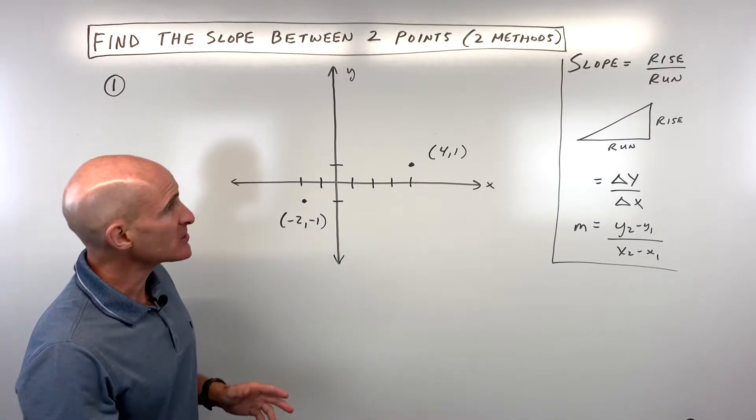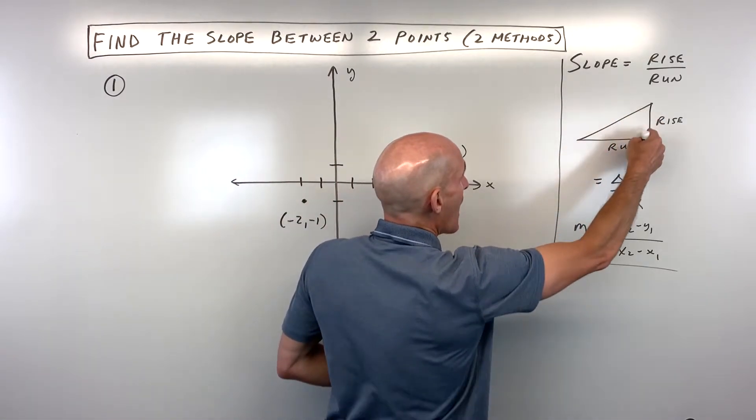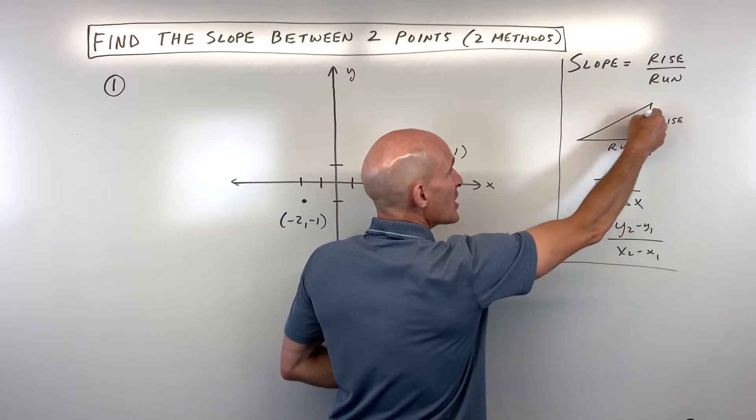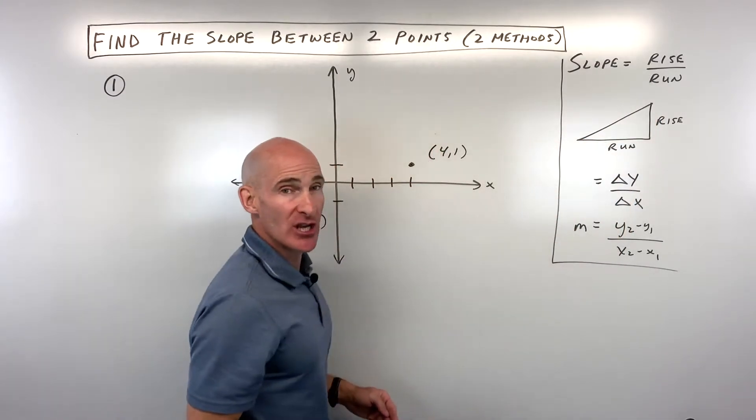Two different techniques. The first technique: when you think of the slope it's this rise, meaning the vertical change, over the run which is the horizontal change.